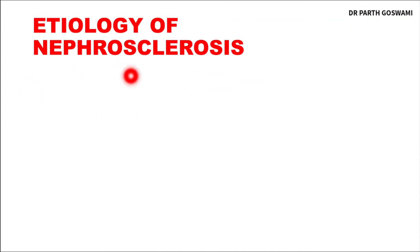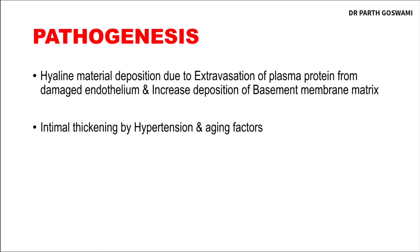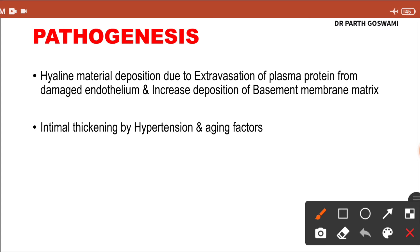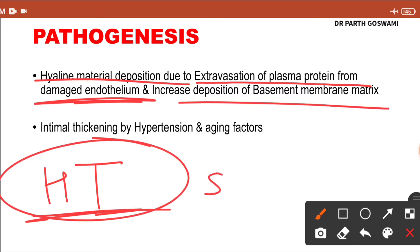As far as the etiology of nephrosclerosis is concerned, it could be due to hypertension, diabetes mellitus, or advanced age — these three are the main etiologies. Regarding pathogenesis, the main mechanism is endothelial damage, which is seen primarily due to hypertension. Because of endothelial damage, there will be extravasation or leakage of plasma protein from the blood into the glomerulus, leading to hyaline material deposition in the basement membrane.